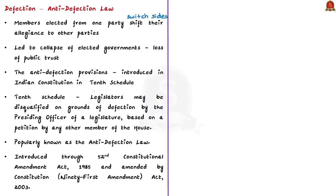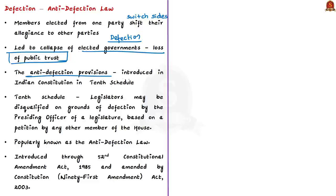In this context, let us have a brief discussion on disqualification provisions given in the Constitution of India. We often see members elected from one party switching their allegiance to other parties for benefits such as ministerial berths — this switching is called defection. Elected governments may collapse as a result, leading to loss of public trust in democratic governments. To bring stability to democratically elected governments, anti-defection provisions were introduced in the Indian Constitution as a separate schedule.